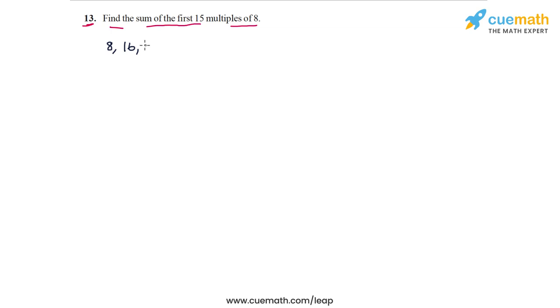In question 13 of this exercise, we have to find the sum of the first 15 multiples of 8. Let's write the first few multiples of 8 and analyze the series: 8, 16, 24, 32, and so on. This is clearly an arithmetic progression in which the first term is 8 and the common difference is also 8, and we have to find the sum of the first 15 terms.